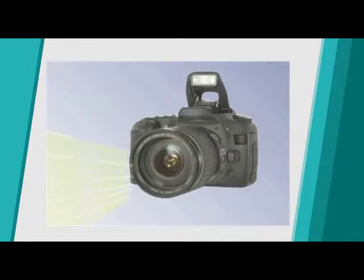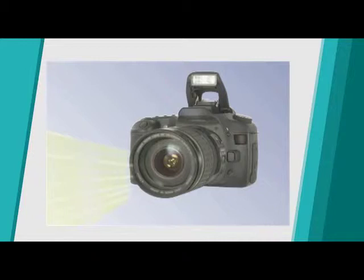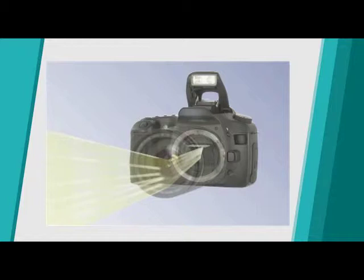Light passes through the glass in the lens past an aperture. The aperture determines how much light continues through the lens to the shutter. The shutter is the gate that opens and closes for a precise amount of time and determines how long the image sensor will be exposed to light. The image sensor is a chip in the camera that records the light and then transfers that information to your camera's memory card.